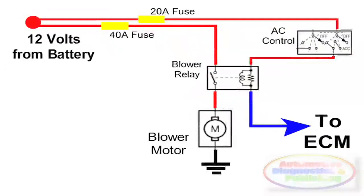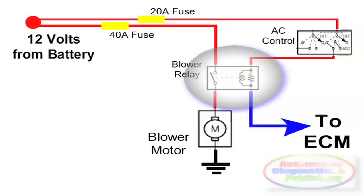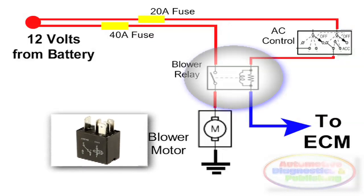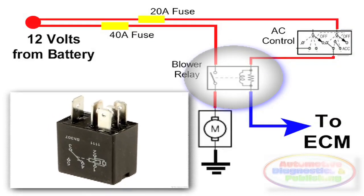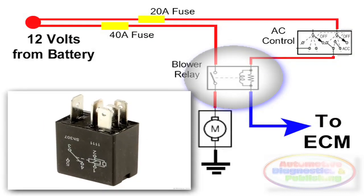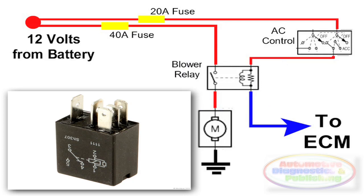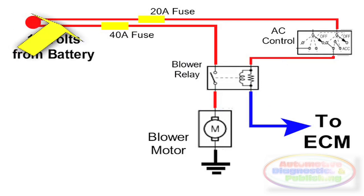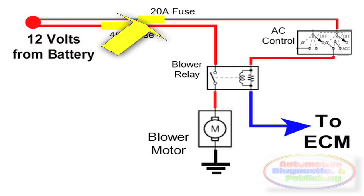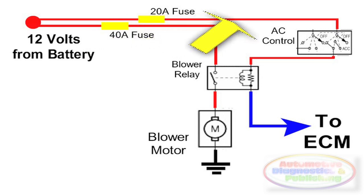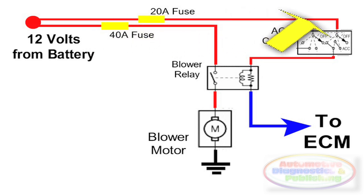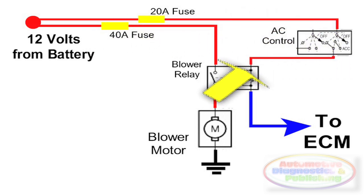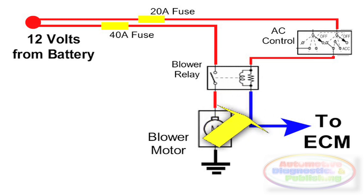Type 1 connection: the condenser fan is triggered by a relay. This relay is activated from the AC control or button, and the ECM. In this diagram, the relay is connected to 12-volt power through a fuse. The relay coil is tied to power through the HVAC control knob. The other side of the relay coil is tied to the ECM, which gives it a ground.